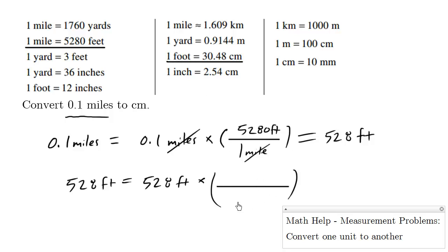Numerator and denominator are the same. We want the feet to cancel out, so I'm going to put 1 foot on the bottom. And the numerator here will be 30.48 centimeters.